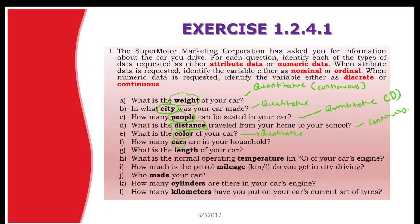How many cars do you own? We count the cars, so this is discrete. What is the length of your car? Length is continuous. What is the normal temperature of your engine? Temperature is continuous. Petrol mileage is also continuous. Who made your car? That is qualitative. How many cylinders does your engine have? Cylinders can be counted — discrete. How many kilometers does it travel per liter? Kilometers can be measured — continuous.